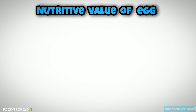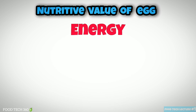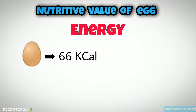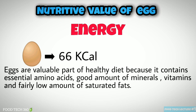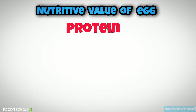Now let's see the nutrients present in eggs. This table shows the nutritive value of eggs per 100 grams. It is clear that eggs are a good source of energy, protein, fat, phosphorus, etc. The calorie content of a medium-sized egg is 66 kilocalories. Eggs are a valuable part of a healthy diet because they contain essential amino acids, good amounts of minerals and vitamins, and a fairly low amount of saturated fats. Fat present in egg is highly emulsified, hence can be readily digested and absorbed.